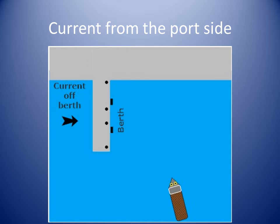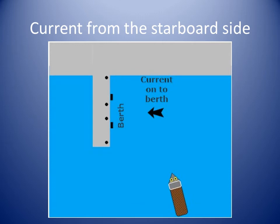In this diagram, the helmsman has to maneuver the boat with a current on her starboard side, pushing her boat onto her berth. This is not so straightforward.